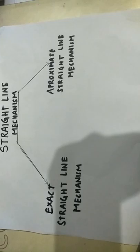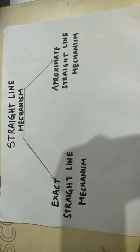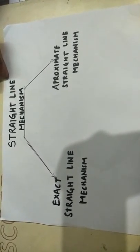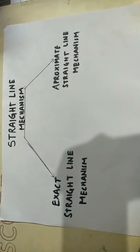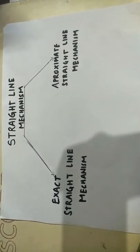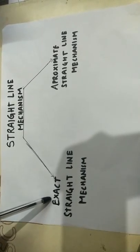I would like to tell you about Straight Line Motion Mechanism, which is the one we will find when one link is fixed and the other link gives a straight line. Straight Line Motion Mechanism is divided into two: exact straight line motion mechanism and approximate straight line motion mechanism.